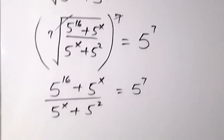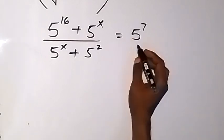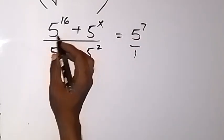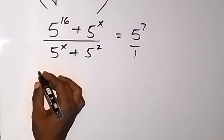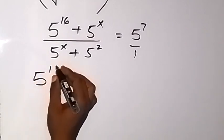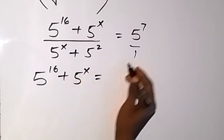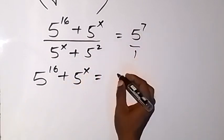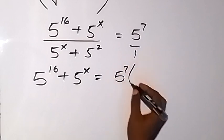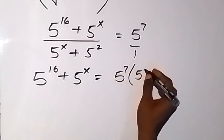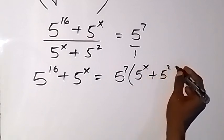From here, we cross multiply. When we cross multiply, we get 5 raised to power 16 plus 5 raised to power x equals 5 raised to power 7 times bracket 5 raised to power x plus 5 raised to power 2.